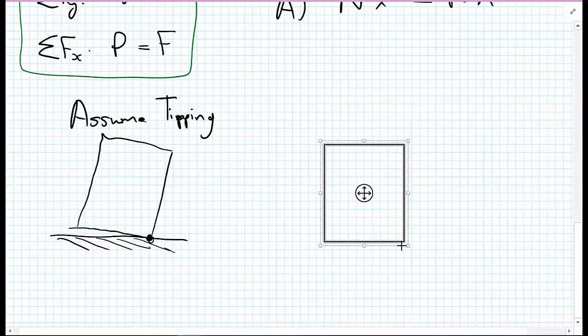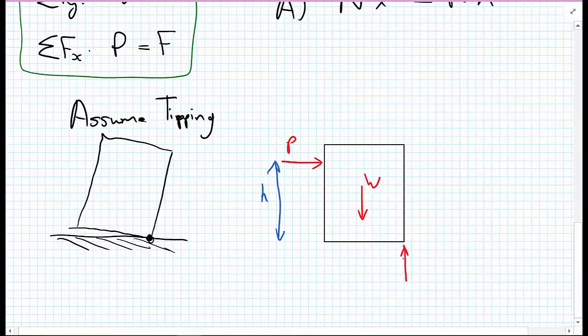We have the weight W acting through the centroid of the box down. We have the applied load P, which is acting at the height H from the ground or the bottom of the box. And then we have the normal force now has to act right on this corner. It's the only point where the box is in contact with the ground.